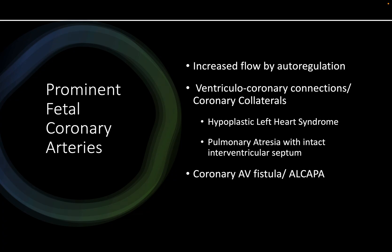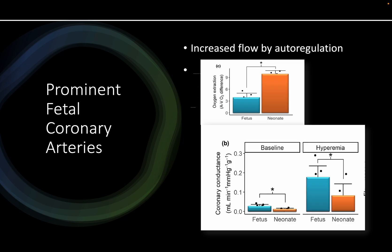In fetal circulation, you can also have a prominent coronary artery. If you see coronary arteries on echo or see flow in the coronary arteries in the fetus, that means they are dilated — normal coronary arteries are not seen. A prominent coronary artery occurs whenever there is stress on the heart, right ventricular overload, left ventricular overload, or a situation of hypoxemia.